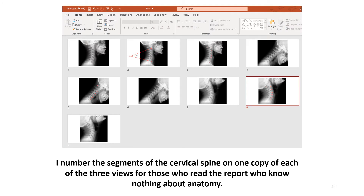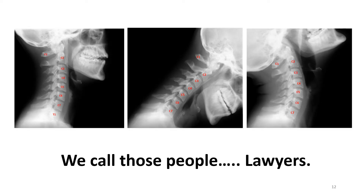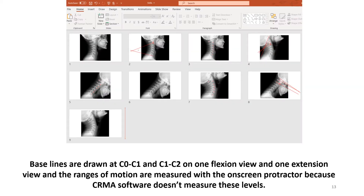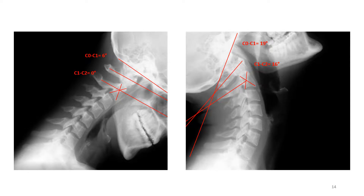I number the segments of the cervical spine on one copy of each of the three views for those who read the report who know nothing about anatomy — we call those people lawyers. I realize that mensuration programs like Posture Ray can do things like this, but until I get my own reading software, this is just what I have to do. Range of motion at occiput to C2 is very important, so I draw baselines on the occiput, atlas, and axis, and measure the angles in flexion and extension.